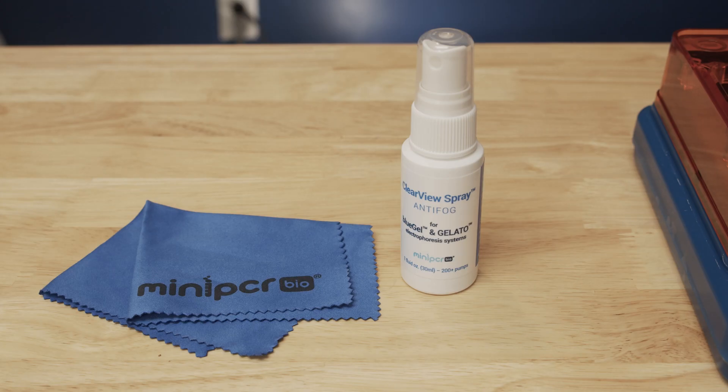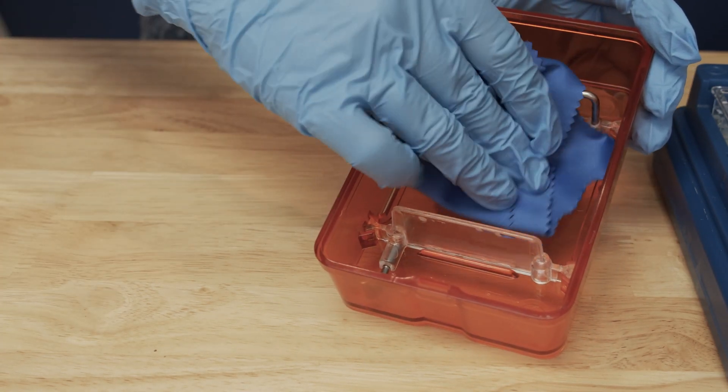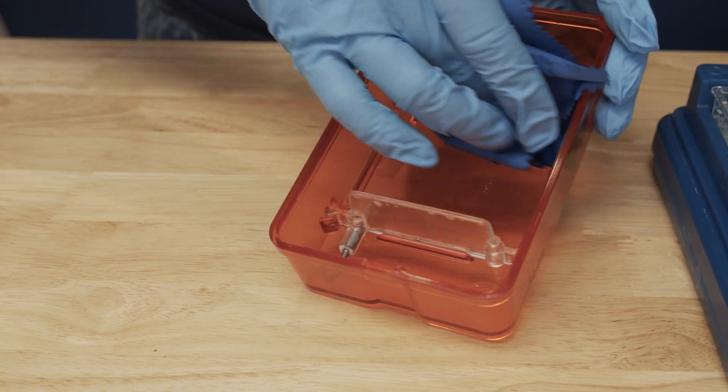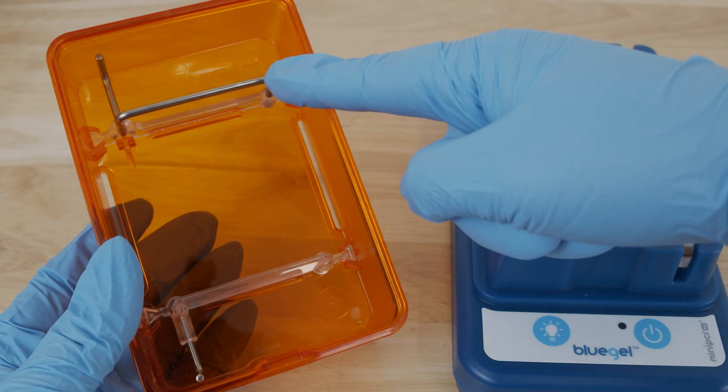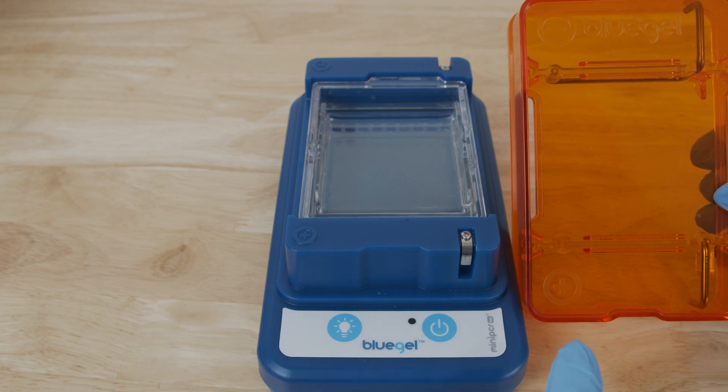Your Blue Gel System will include ClearView spray and a small microfiber cloth to prevent condensation. Spray a single pump of the ClearView spray onto the inside of the orange cover and spread it with the microfiber cloth. The orange cover contains the electrodes and can only be placed onto the base in the correct orientation.